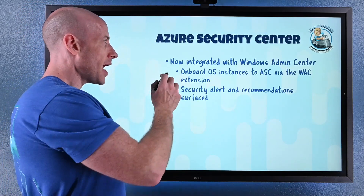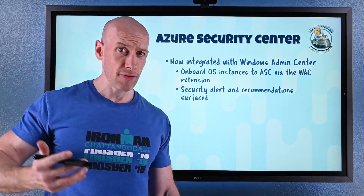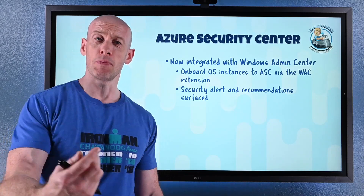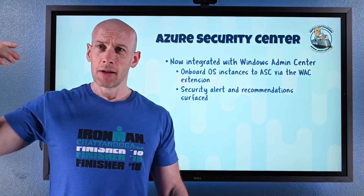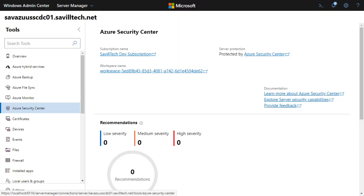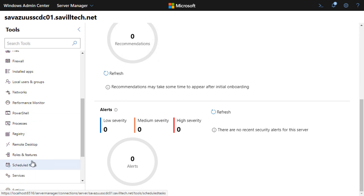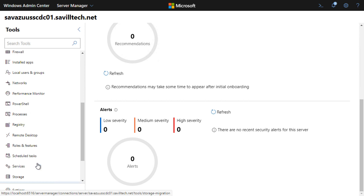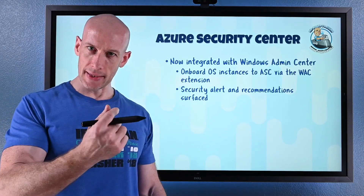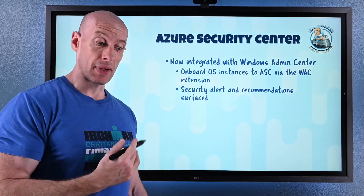Azure Security Center is now integrated with Windows Admin Center even more. I can onboard operating system instances in a hybrid environment — on-premises or wherever. There's an extension for Azure Security Center in Windows Admin Center. If you're not using Windows Admin Center you should be — I can install it on a server and access it as a gateway for many machines, with no agent deployed. It uses native WSMAN technologies and has huge breadth of functionality: storage spaces direct, clusters, Hyper-V, PowerShell, disk management. It's integrated with Azure Monitor, Azure Backup, Azure Site Recovery, Azure Automation, and now Azure Security Center. Through this extension I can onboard my machines into Security Center and see security alerts and recommendations.